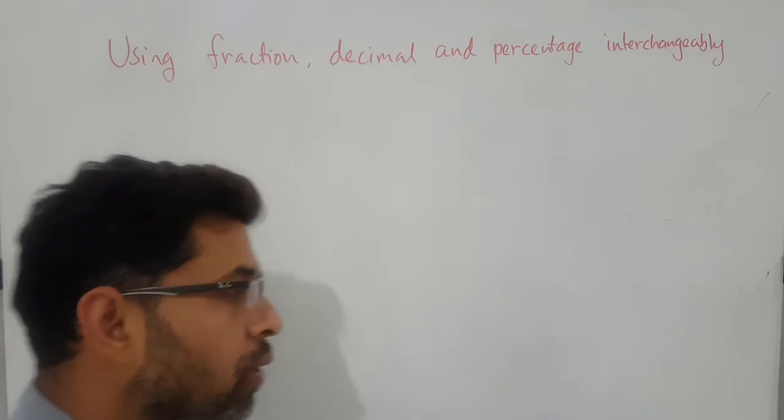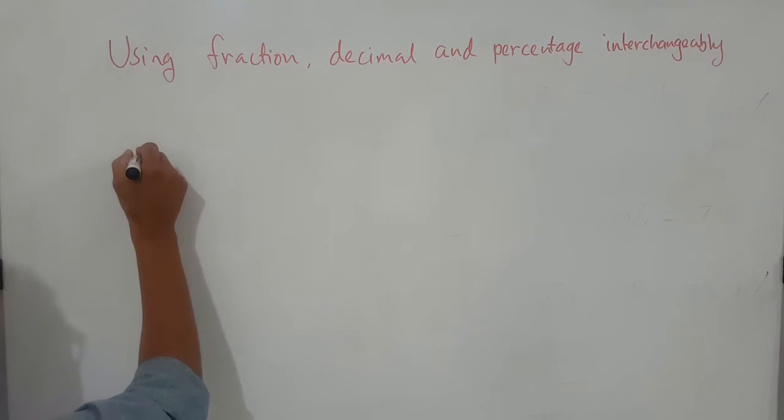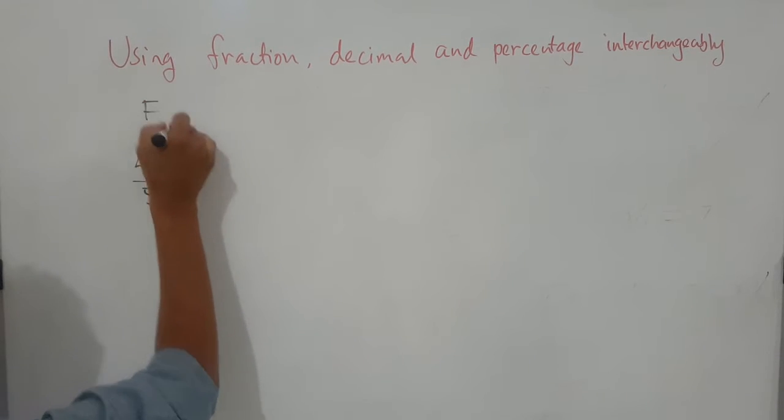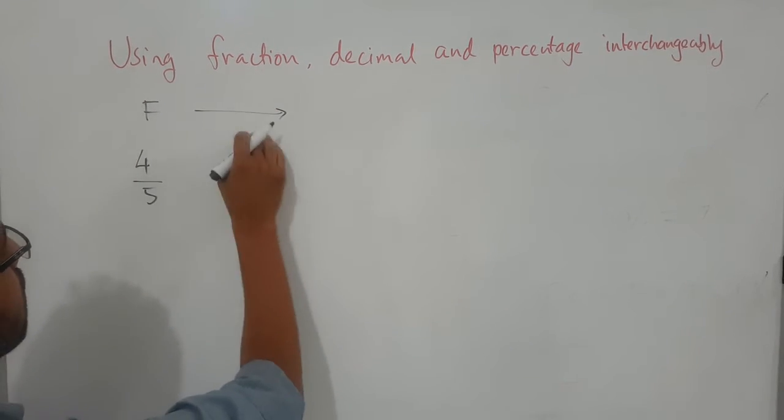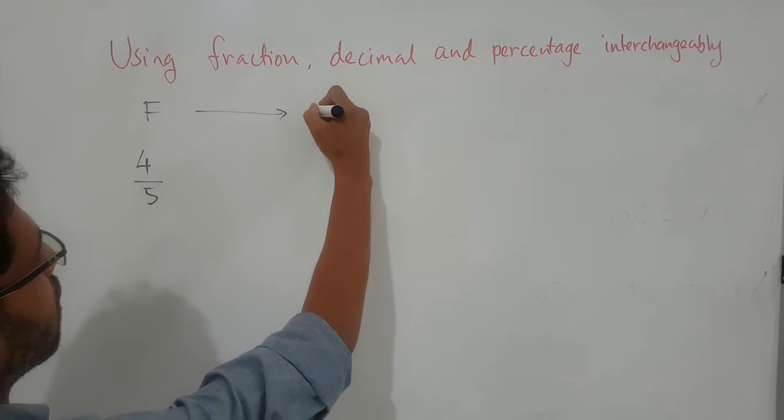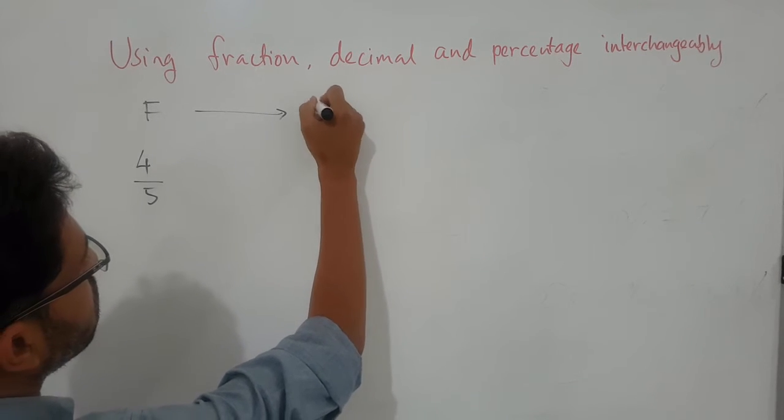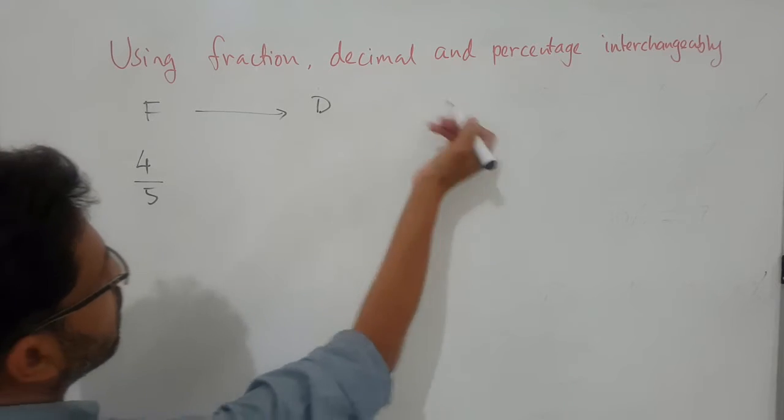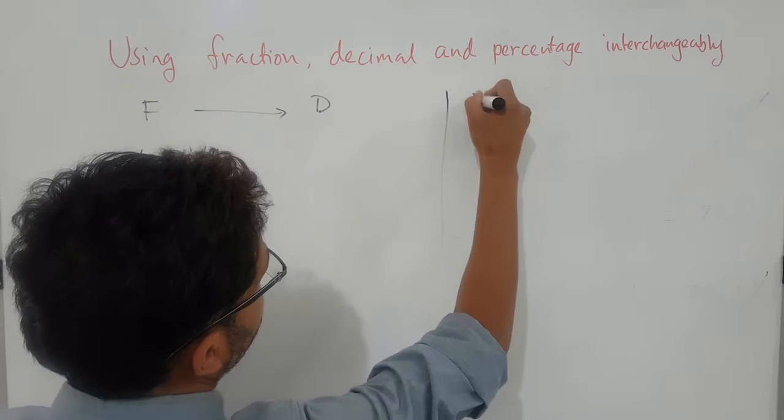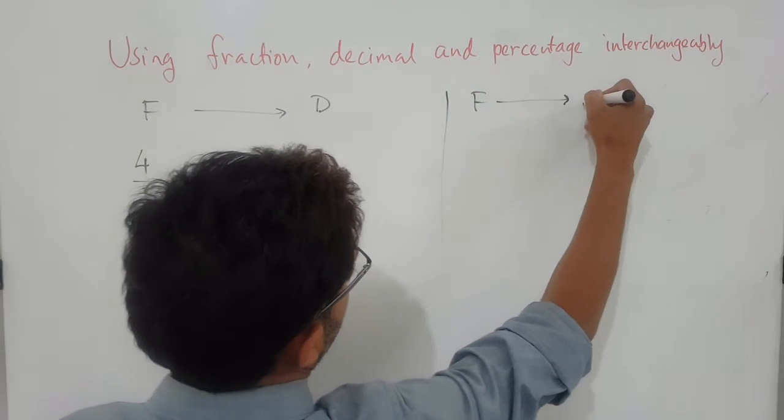So now we are trying to look at converting fractions. Let's say 4 over 5, we have a fraction, so this is the fractional form. We are moving fraction to, let's say, a decimal, and then we are going again fraction to percentage.